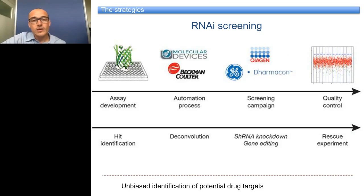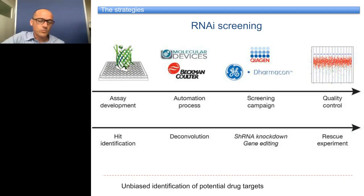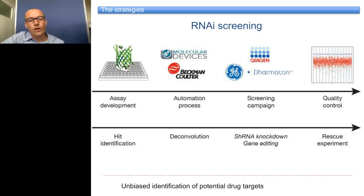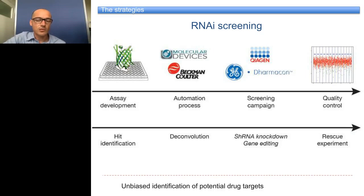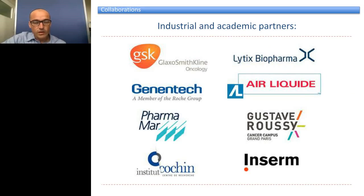The other main strategy is the RNAi screening approach. We use the Biosensor Cell lines we have developed, do the necessary automation, run the screening campaigns, perform QC, and proceed to hit identification. As we do pool screens, we perform deconvolution — getting four to six oligos hitting the same target. We then validate our findings either by shRNA or by gene editing using CRISPR or TALEN constructs, followed by rescue experiments to publish in high-impact journals.